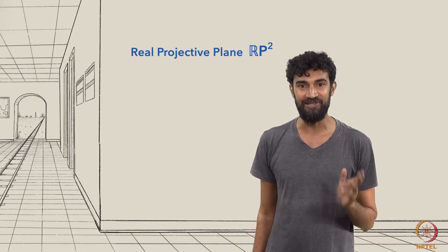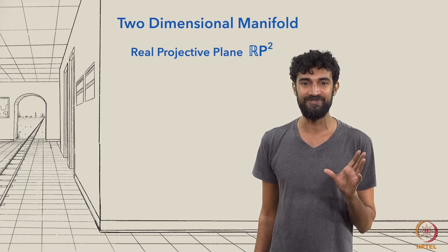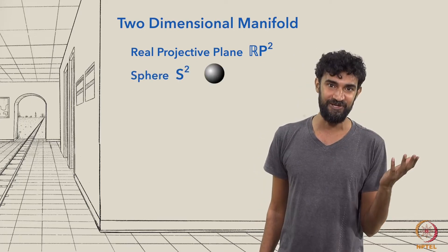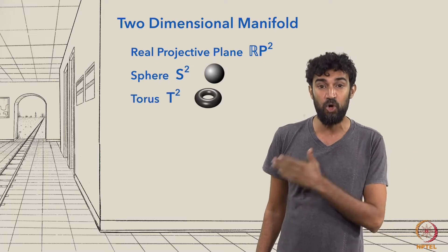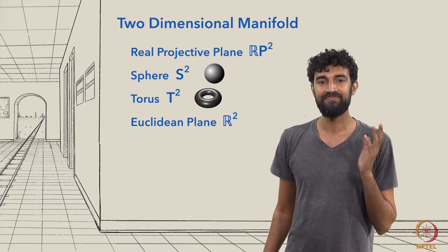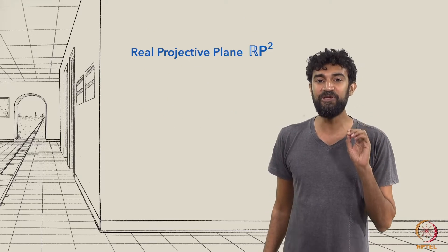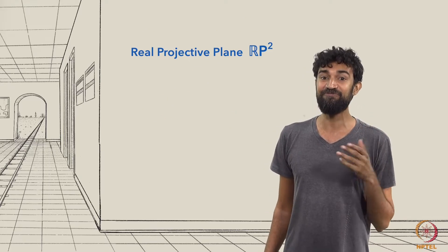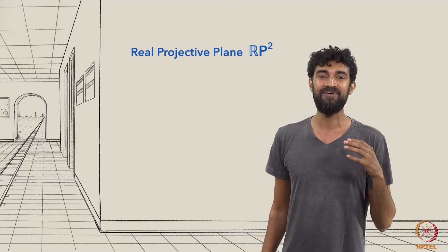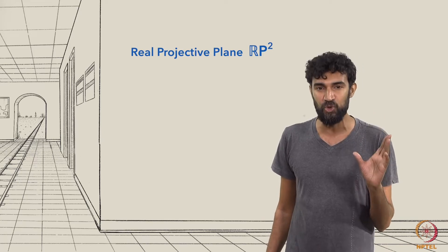The real projective plane is an example of a two-dimensional manifold. Other two-dimensional manifolds include the sphere, the torus, or just the regular Euclidean plane. But unlike those examples, the real projective plane can't be fully embedded in three-dimensional space, making it one of the simplest manifolds that we can't fully visualize.